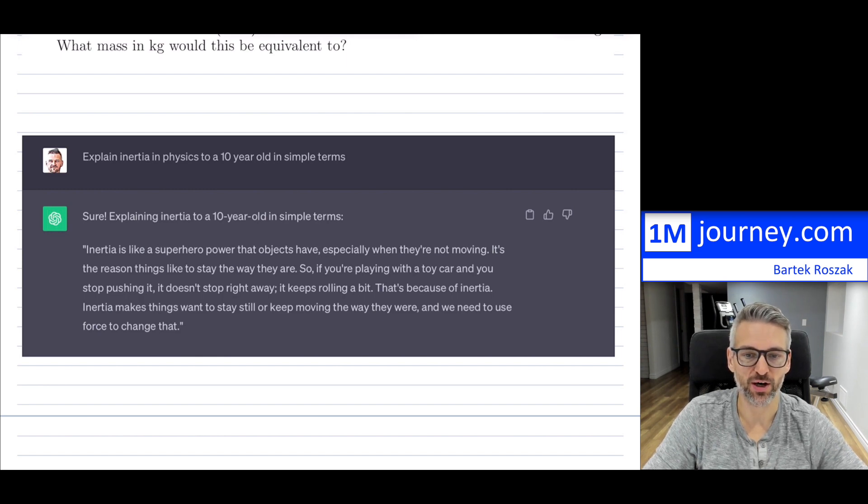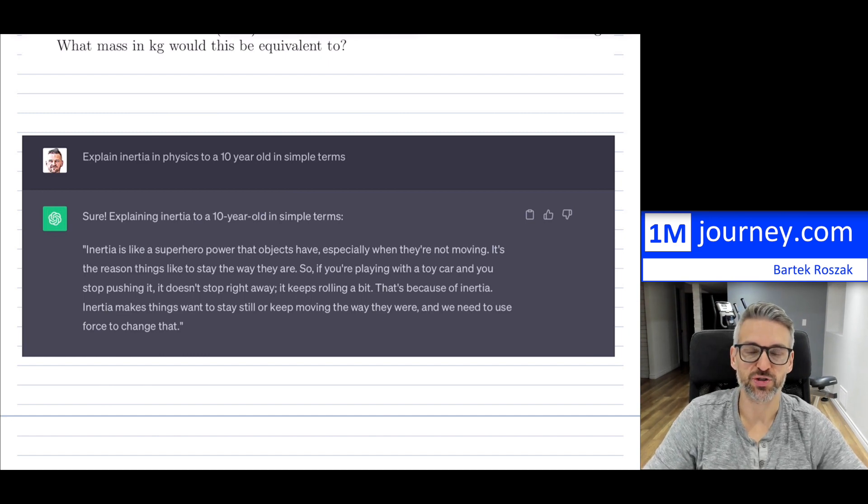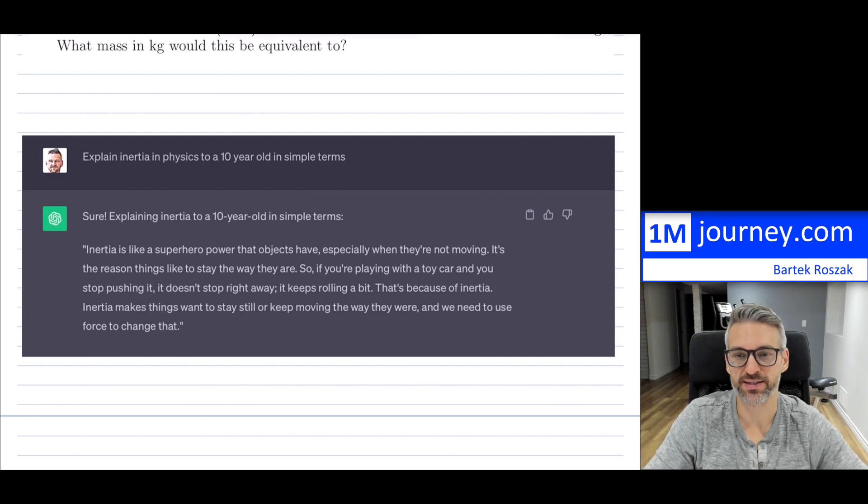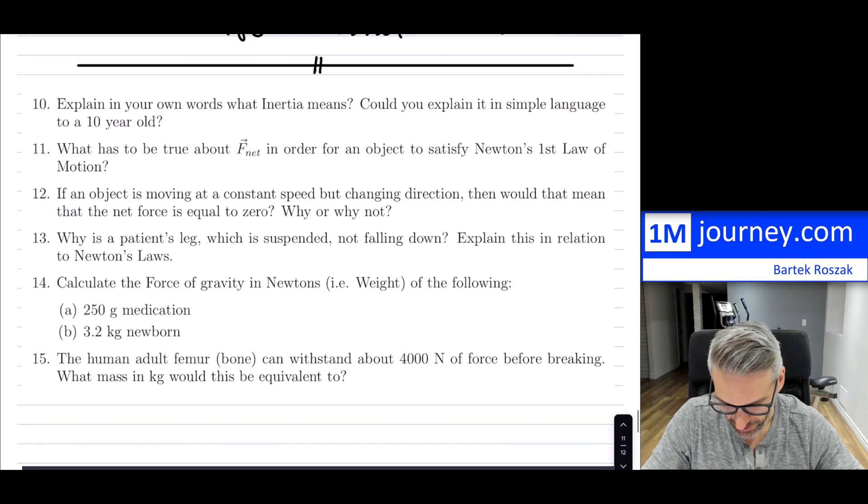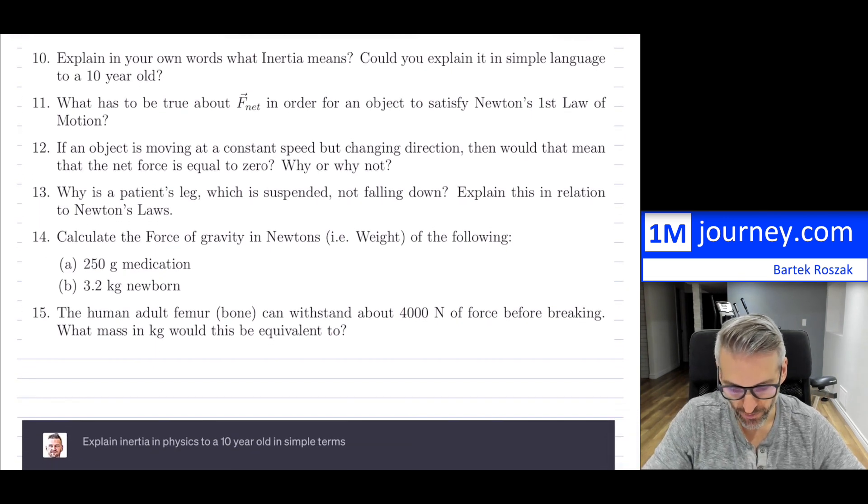Inertia makes things want to stay still or keep moving the way they are, and we need to use force to change that. If you tell a 10-year-old, maybe you don't want to say force—you might want to say you need to use a push or some kind of pull to change its actual movement or the way that it's stayed and fixed. This is actually pretty good on ChatGPT's part.